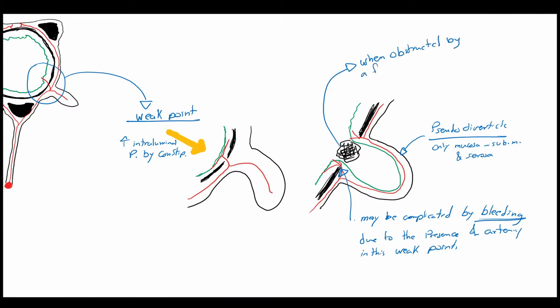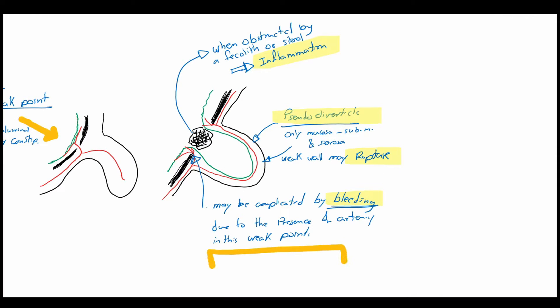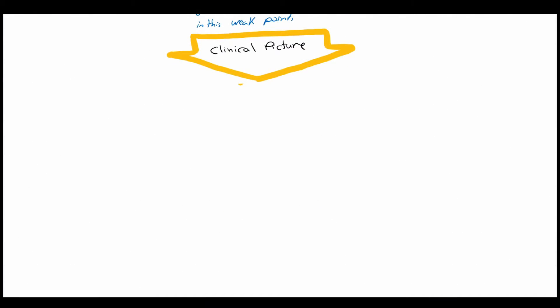Obstruction of its entrance with hard stool can lead to inflammation and in turn, as a thin-walled pseudo-diverticle, this may ease the rupture. These four mechanisms - diverticle formation, bleeding, inflammation, and rupture - sum up all the clinical picture and complications of diverticular disease.